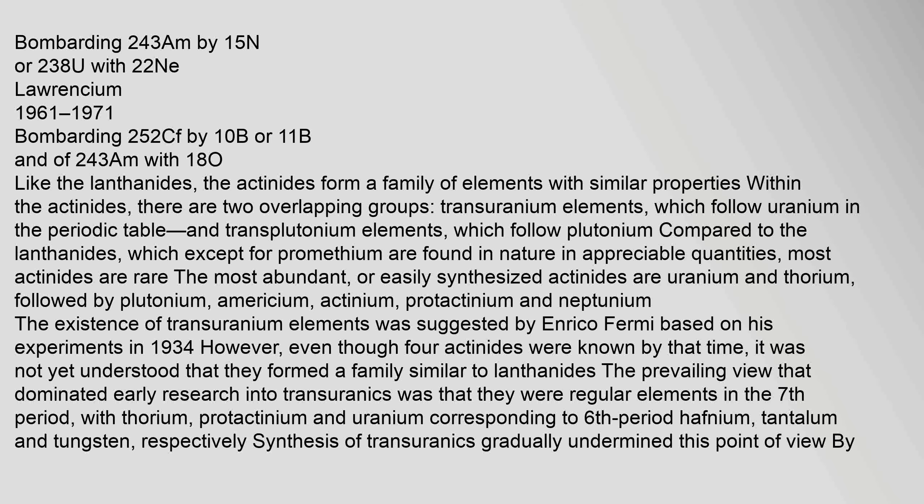Followed by plutonium, americium, actinium, protactinium, and neptunium. The existence of transuranium elements was suggested by Enrico Fermi based on his experiments in 1934. However, even though four actinides were known by that time, it was not yet understood that they formed a family similar to lanthanides. The prevailing view was that they were regular elements in the seventh period, with thorium, protactinium, and uranium corresponding to sixth-period hafnium, tantalum, and tungsten respectively.